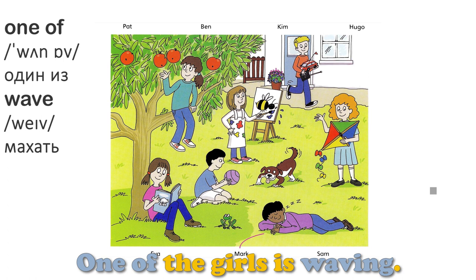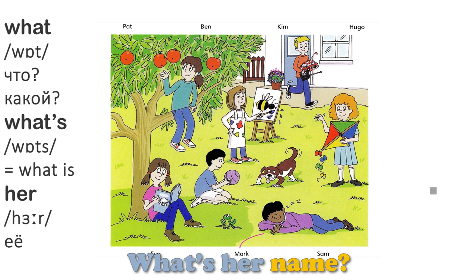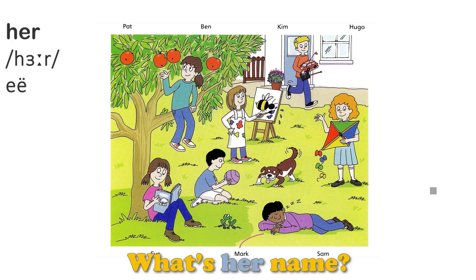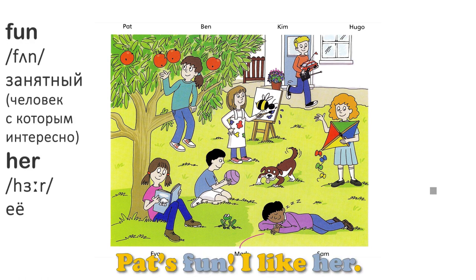One of the girls is waving. What's her name? The girl with the kite in her hands? Yes, what's her name? That's Pat. Pat's fun. I like her.